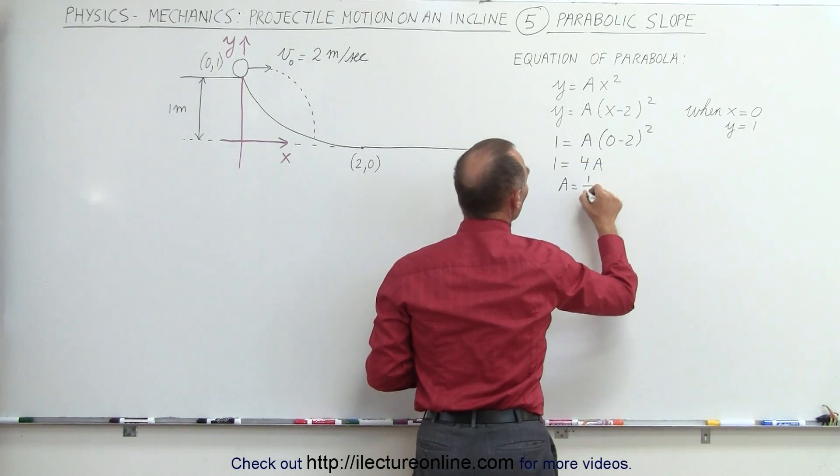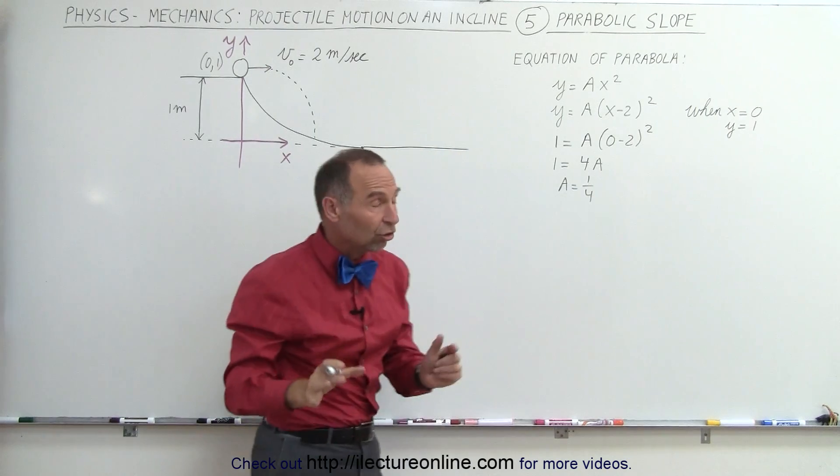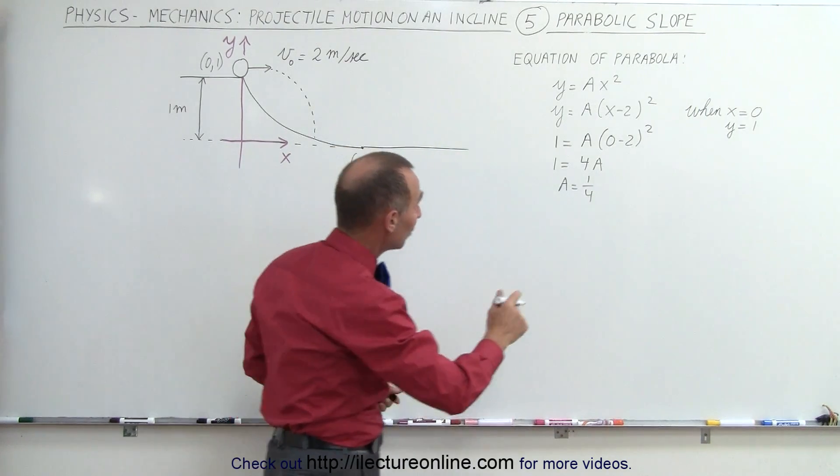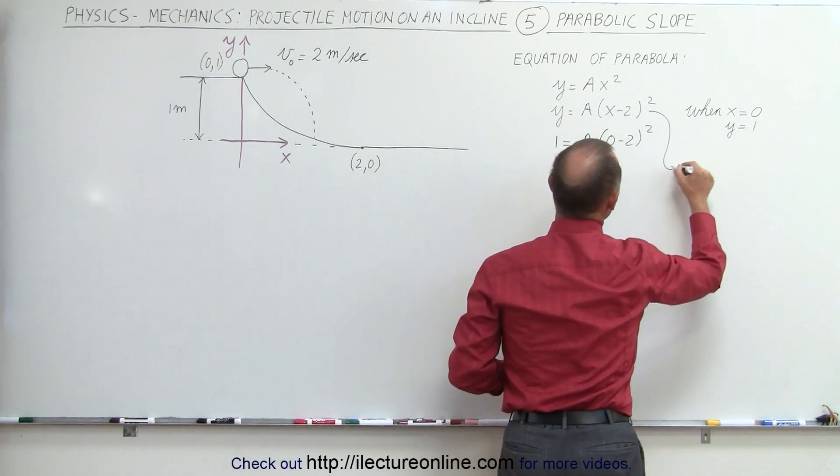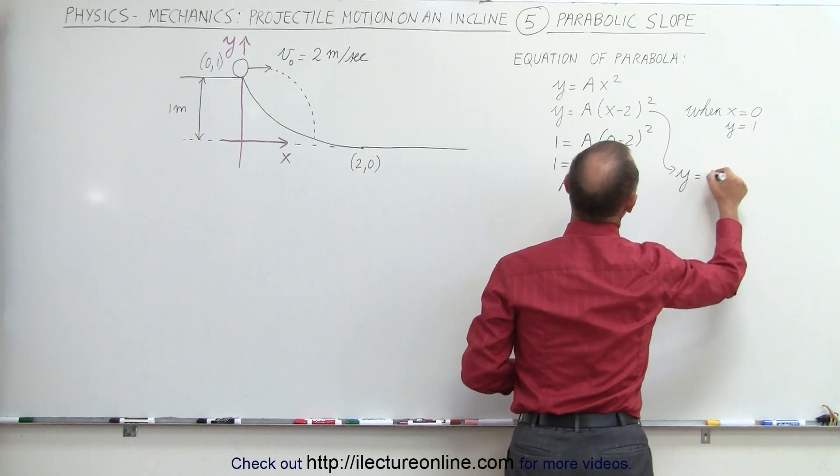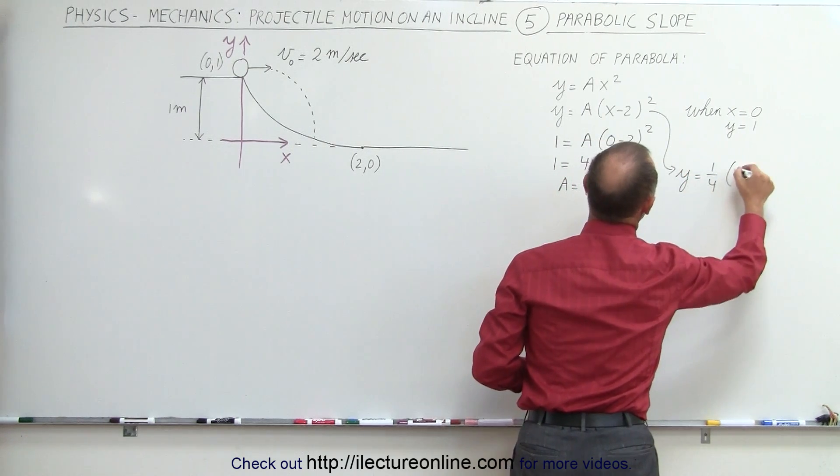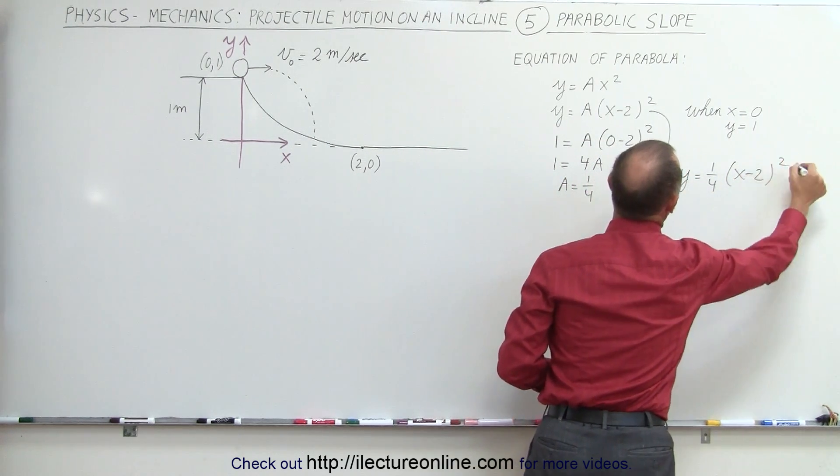which means that the relationship between x and y can be used here by saying that y is equal to one quarter times (x minus 2) squared.